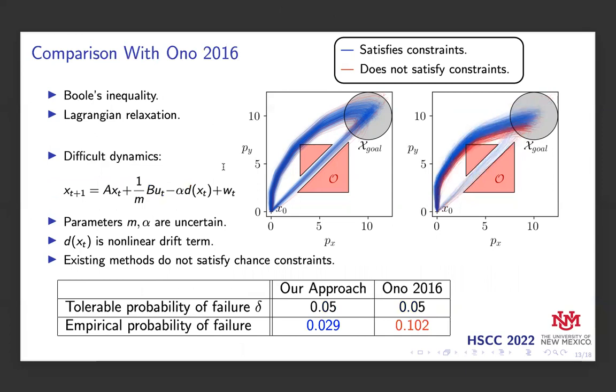We then compared our solution with an existing result from ONO 2016, which uses Boole's inequality to decompose the chance constraints and a Lagrangian relaxation coupled with a bisection technique to compute a mixed policy. We can see that our method computes a policy which is able to satisfy the chance constraints and is able to handle the non-linear dynamics and uncertain parameters of the system. But these elements are challenging for existing techniques, and we can see that the existing methods can fail to satisfy the constraints in the presence of these uncertainties.